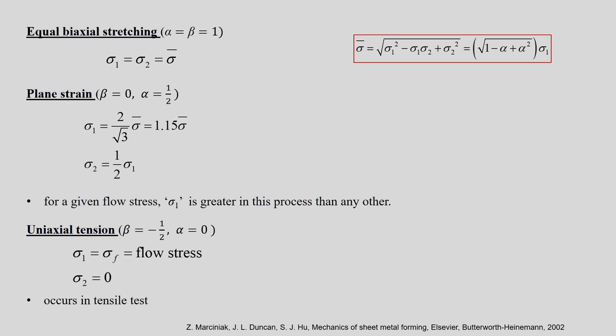In equibiaxial stretching, alpha is equal to beta equal to 1; that is path OA. Since alpha equals beta equals 1, we can develop some relationships. Sigma_bar is equal to the square root of sigma_1 squared minus sigma_1*sigma_2 plus sigma_2 squared, as per von Mises' yield function. If you put alpha equal to 1, sigma_bar equals sigma_1, which equals sigma_2. So your effective stress is nothing but the principal stresses.